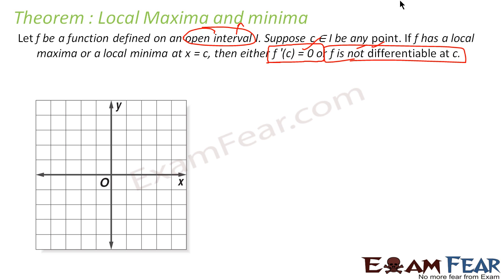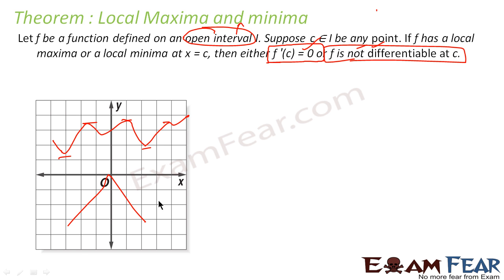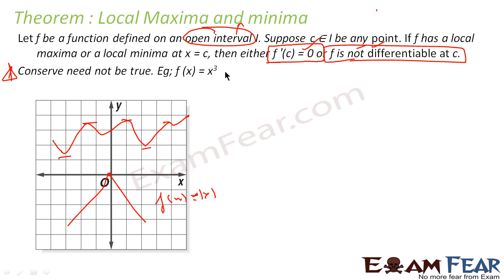But please note the converse is not true. If my f'(c) = 0, these are the points I can consider for local maximum and minima. For example, if f(x) = |x|, this is not differentiable at 0, so this can also be a point of local maximum. But please note the converse is not true.